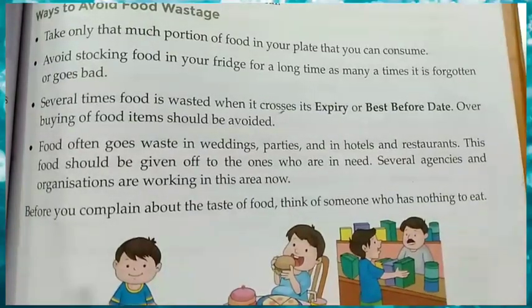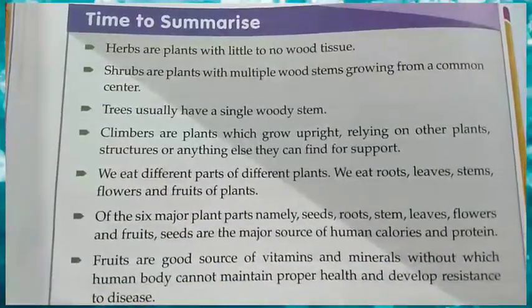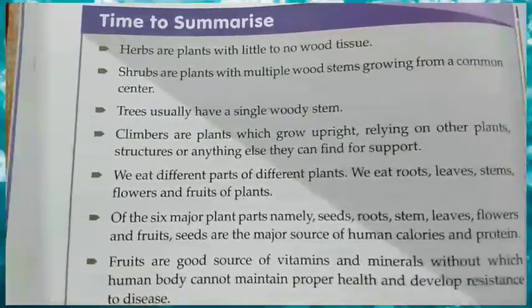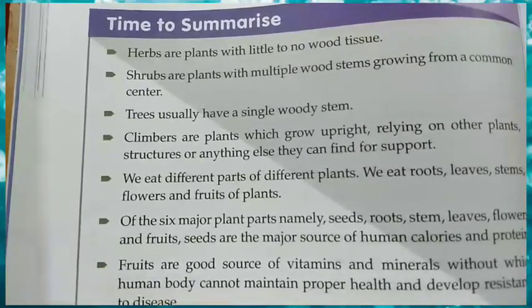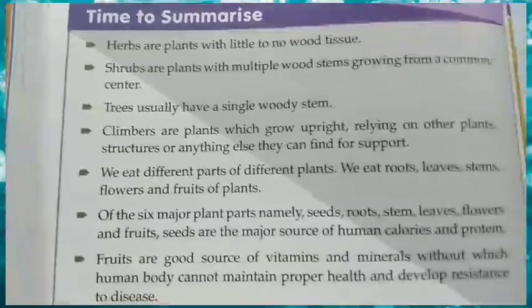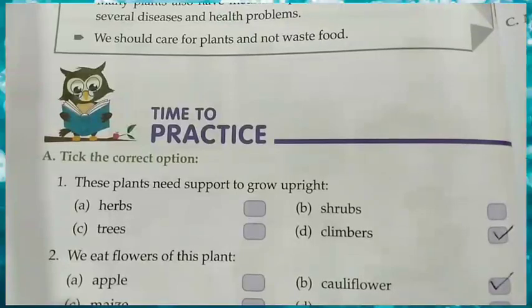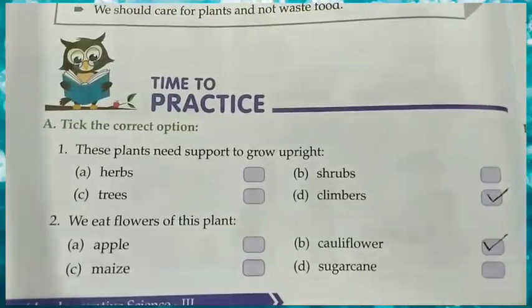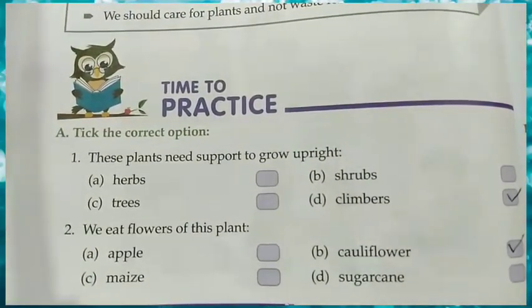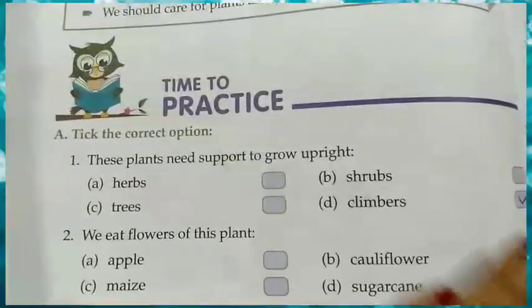In this way we have completed this chapter. Now it's time to practice. Let's do half of the objective work. These plants need support to grow upright — Herbs, Trees, Shrubs, or Climbers? The answer is Climbers.